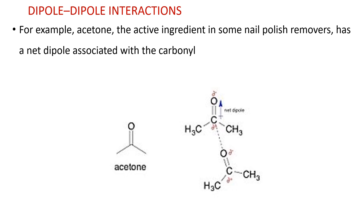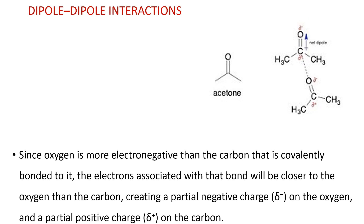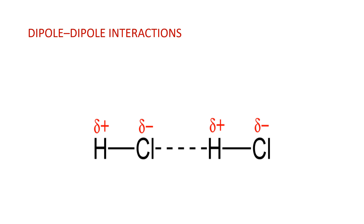The interaction between two acetone molecules is an example for dipole-dipole interaction. Since oxygen atom is more electronegative than carbon, the electrons associated with that bond will be closer to the oxygen than the carbon, creating a partial negative charge on the oxygen and a partial positive charge on the carbon. Another example for dipole-dipole interaction is the interaction between two hydrogen chloride molecules. HCl molecules have a dipole moment because the hydrogen atom has a slight positive charge and the chlorine atom has a slight negative charge, resulting in a small dipole-dipole force of attraction between adjacent hydrogen chloride molecules.